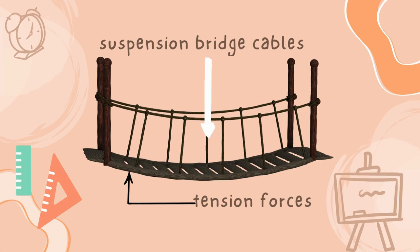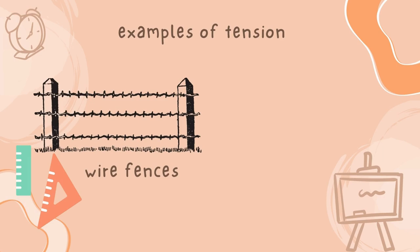Examples of tension in daily life include suspension bridge cables. They could not sustain compression or they'd collapse. Elastic bands and guitar strings, wire fences, springs, elevators, and climbing ropes.